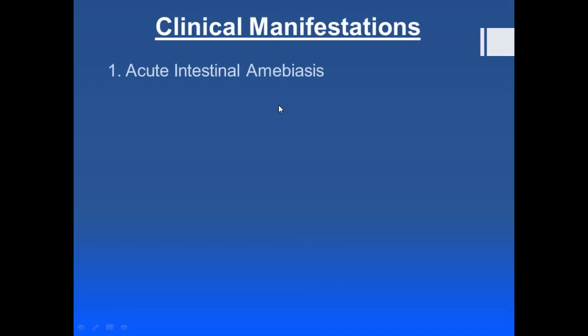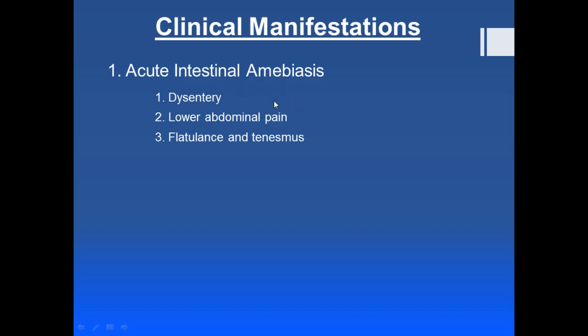Now for clinical manifestations: in acute intestinal amoebiasis there will be dysentery — that is bloody diarrhea with mucus — lower abdominal pain, flatulence, and tenesmus. Tenesmus mainly means there is an urge to defecate but it is a false urge — no actual defecation takes place, you just have the urge. These are the clinical manifestations of acute intestinal amoebiasis.